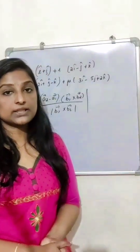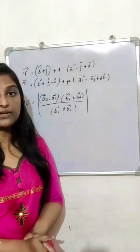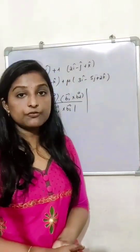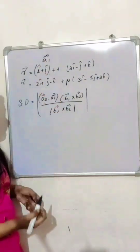Shortest distance between two lines is given by the modulus of a2 minus a1 dot b1 cross b2, divided by modulus of b1 cross b2. Here, a1 vector is i plus j.